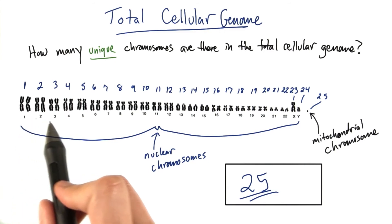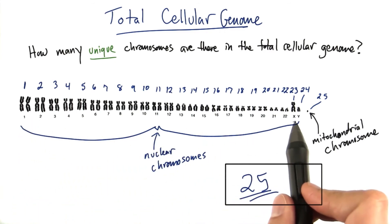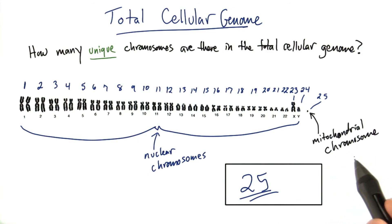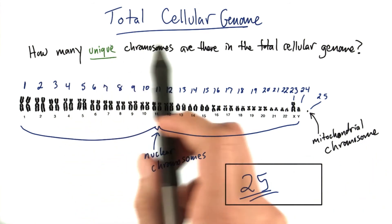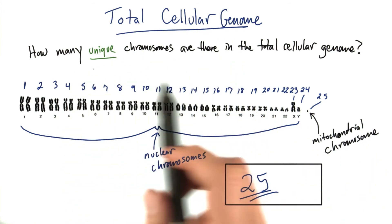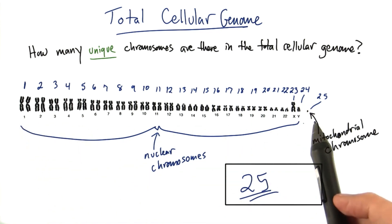Remember, you have one extra copy of every other autosome in your genome at any given time in the cell. And there are many mitochondria, and thus many mitochondrial chromosomes in a cell at a given moment. But when we talk about the total cellular genome, how many unique chromosomes there are, there are a total of 25 when we leave out the extra copies.